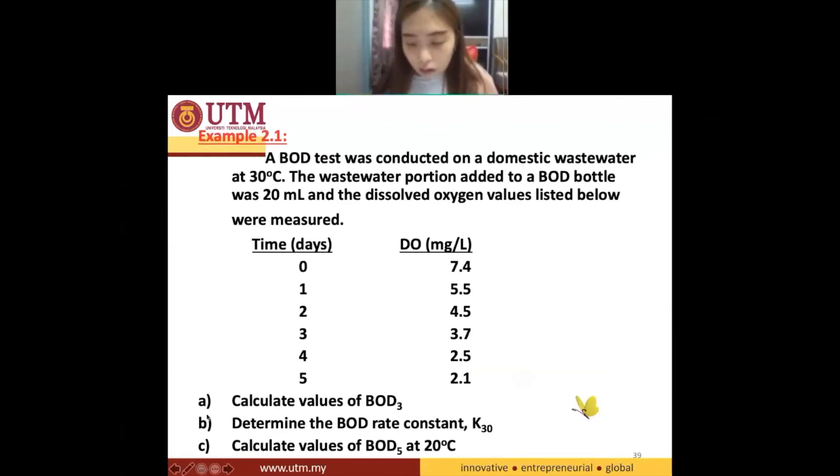Focus on question part B. Determine the BOD rate constant, K30. So we remember that if you want to find out, we need to plot graphs, right? So for us to plot graph, you have to, you know, somehow...